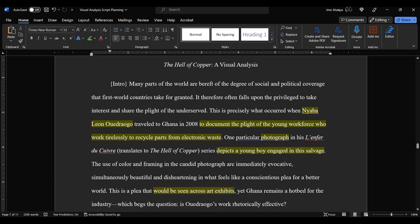And that's my opening sentence because I want to transition that into the idea of the speaker here using his photography to bring attention to this, bring attention to other countries who might want to intervene and might want to help if there are any issues in Ghana. "To document the plight of the young workforce who work tirelessly," that's the purpose. Identify that it's a photograph. "Depicts a young boy engaged in salvage." So in my introduction paragraph, I'm already mentioning what the narrative is here.